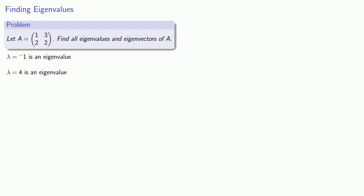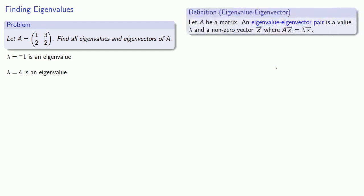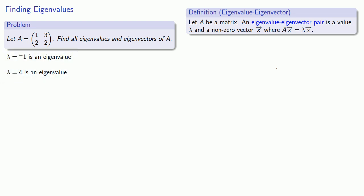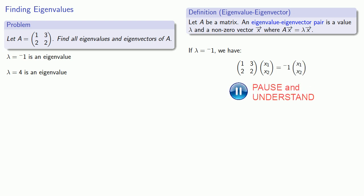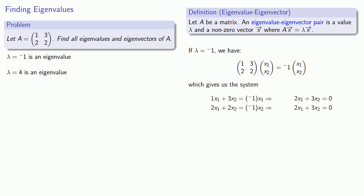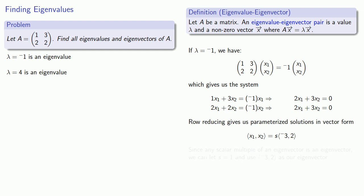Now how do we find the eigenvectors? Remember that when our linear transformation acts on the eigenvector it produces a scalar multiple of the eigenvector, and since we know the eigenvalues we can set up a system of equations. For lambda equals negative 1, our matrix acting on the vector (x1, x2) gives us negative 1 times (x1, x2). We rewrite this as a system of linear equations, solve, and get parameterized solutions in vector form. Since any scalar multiple of an eigenvector is also an eigenvector, we let s equal 1 and get (−3, 2) as our representative eigenvector.